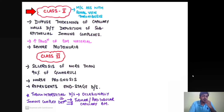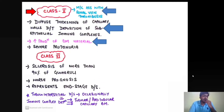Class 5 lupus nephritis is most commonly associated with renal vein thrombosis. There is diffuse thickening of the capillary wall due to deposition of sub-epithelial immune complexes — in contrast to class 4 which has sub-endothelial immune complexes. There is increased production of basement membrane material and severe proteinuria. Class 6, the advanced sclerosing variety, shows sclerosis of more than 90% of the glomeruli, has the worst prognosis, and represents end-stage disease.